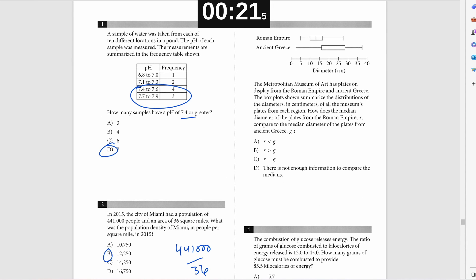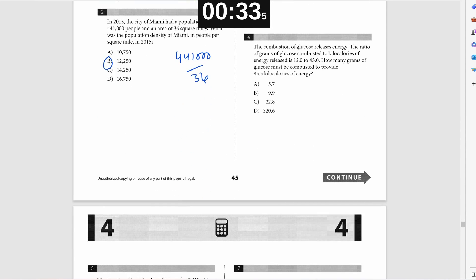Number three is a box and whisker plot. The median on a box and whisker plot is the line in the middle of the box, so I'm comparing that Greece's line is to the right of Rome's, which means the median is going to be greater in Greece. Number four, it gives you a ratio of 12 to 45 and then asks you what do you need on the left side of that ratio for the right side to be 85.5. So I'm saying 85 is roughly double 45 and 22.8 is roughly double 12.